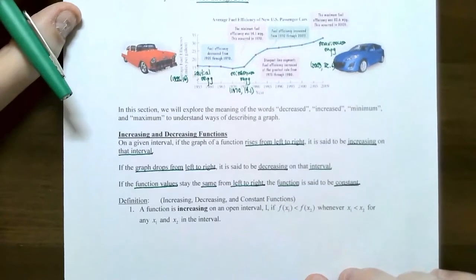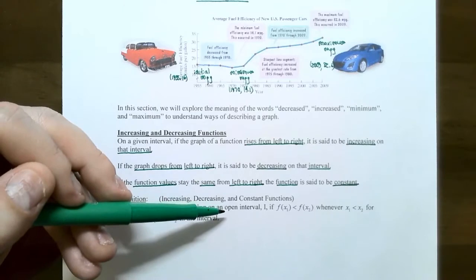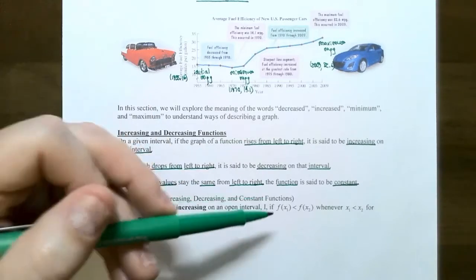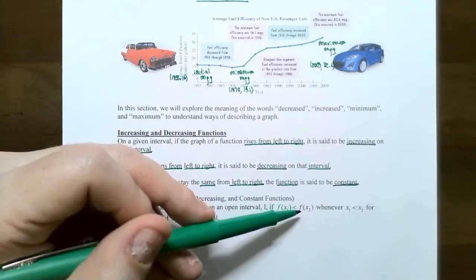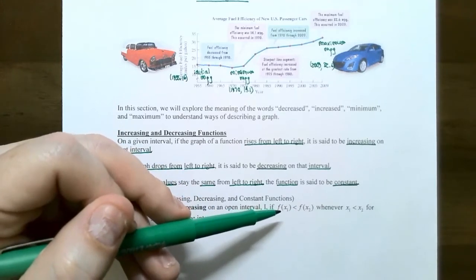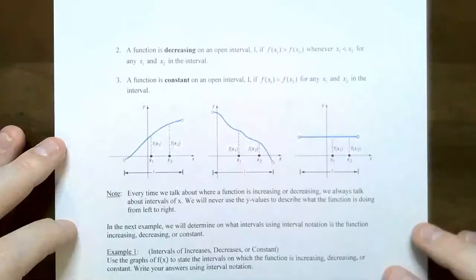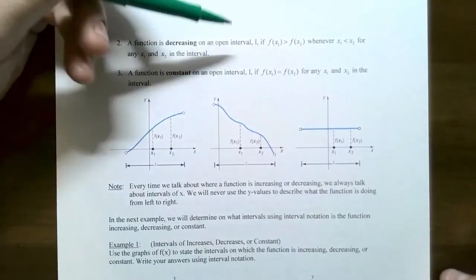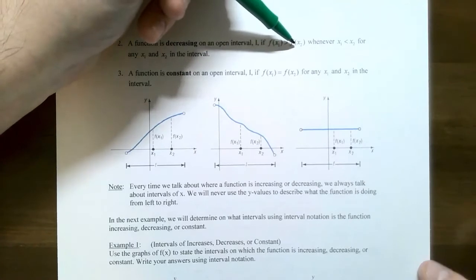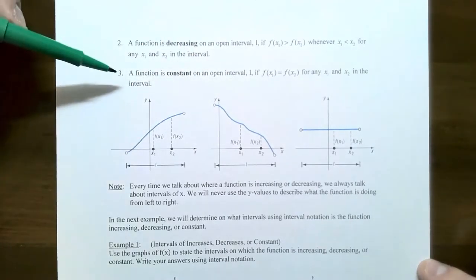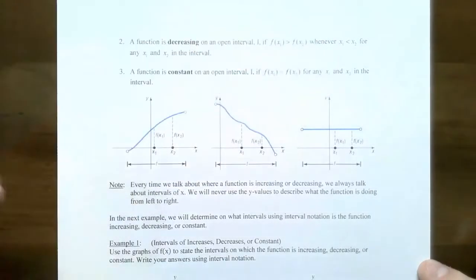The formal definition: a function is increasing on an open interval — always use parentheses — on an interval I, if the y-value at x₁ is less than the y-value at x₂, meaning y-values are getting larger as you go right. A function is decreasing on an open interval if y-values go down as you go left to right. The function is constant on an open interval if the y-values are equal between two different x-values on that interval.